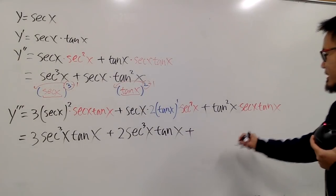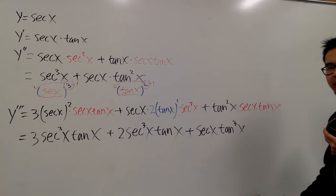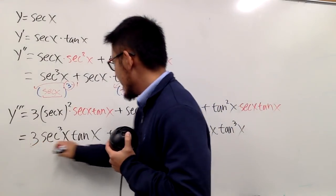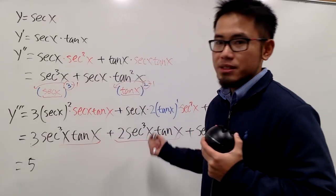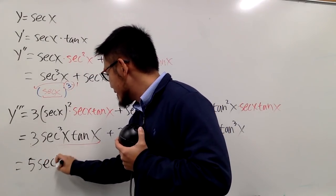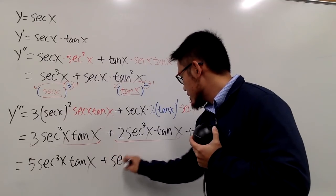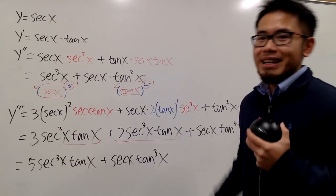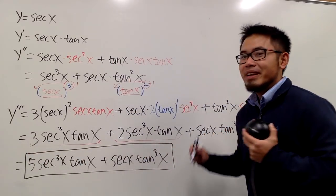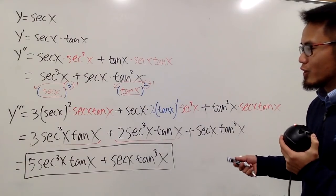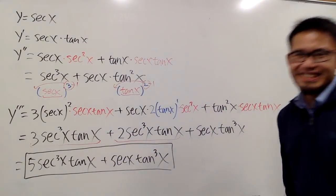Now we simplify everything. For the first term we have 3 secant squared x times secant x tangent x, which is 3 secant cubed x tangent x. Then we add 2 secant cubed x tangent x, and finally plus secant x tangent cubed x. Combining like terms: 3 and 2 give 5, so the third derivative of secant x — the jerk of secant x — is 5 secant cubed x tangent x plus secant x tangent cubed x. This is one of my favourite teaching questions in terms of derivatives, because it has a lot of ingredients.